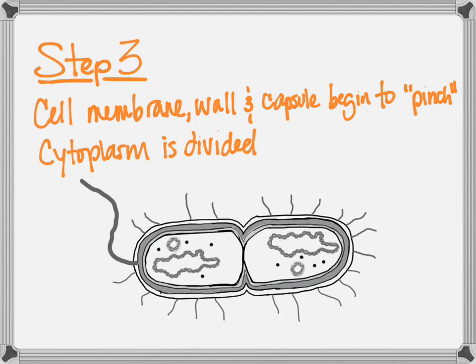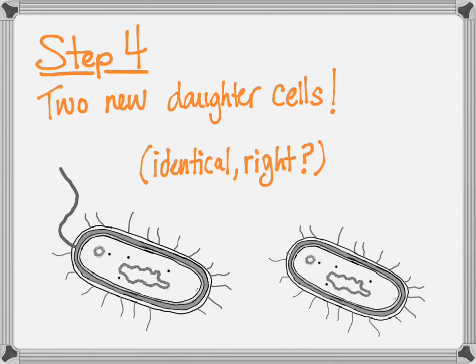Step four is two new daughter cells. We might have to regrow a flagella or something, but these two new daughter cells should be identical to the mother cell that divided to create them.